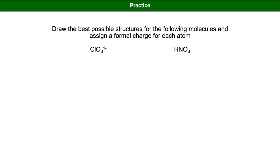We've got chlorate and nitric acid. Let's start by trying to do the Lewis dot structures that you think are the best in terms of their formal charge. Nitric acid might be easier. For nitric acid we get one electron for the hydrogen, plus five electrons for the nitrogen, plus three times six electrons for the oxygen, which is a total of 24.